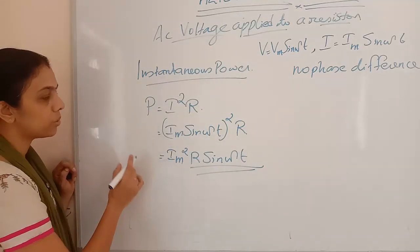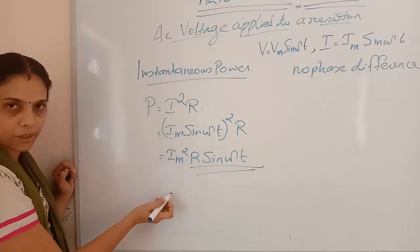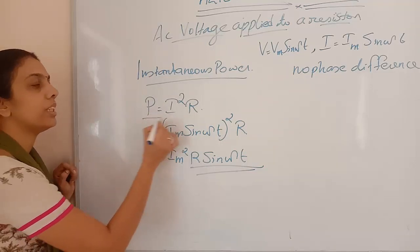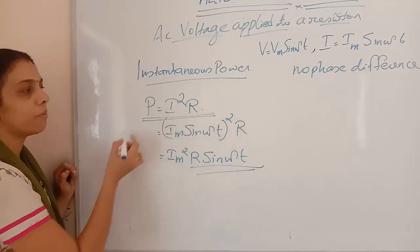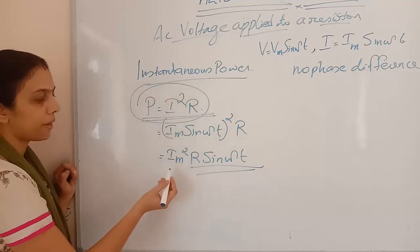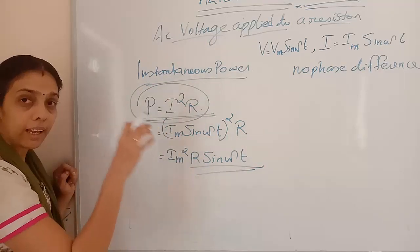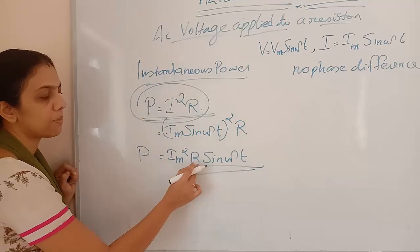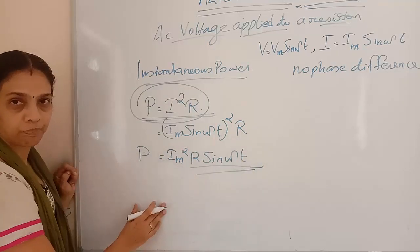This is the instantaneous power. If we are using a DC source we get it as I²R, but with an AC source the power is Im²R sin²(ωt). This is the key difference.